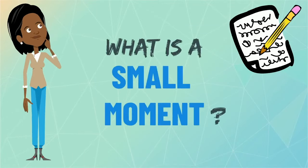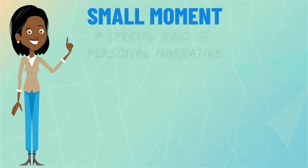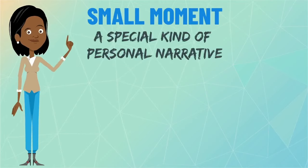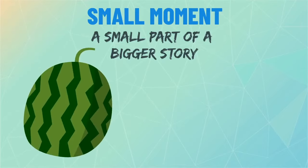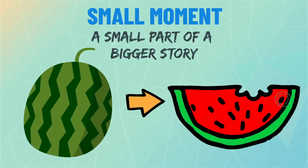What is a small moment? A small moment is a special kind of personal narrative. It is a small part of a bigger story. A good way to remember it is by thinking of a watermelon. A watermelon is a really big fruit, so you can think of it as the big moment. Each watermelon has lots of tiny seeds. The seeds are the small moments.